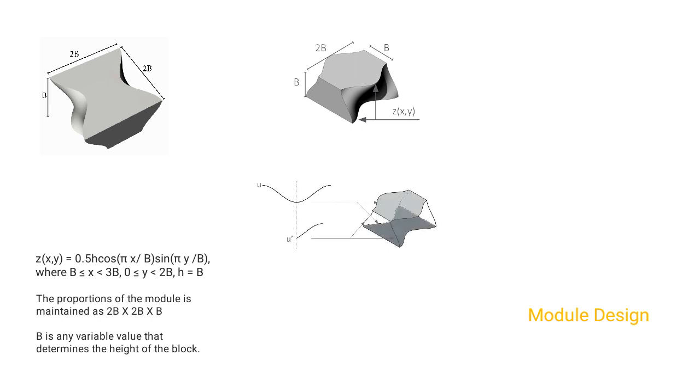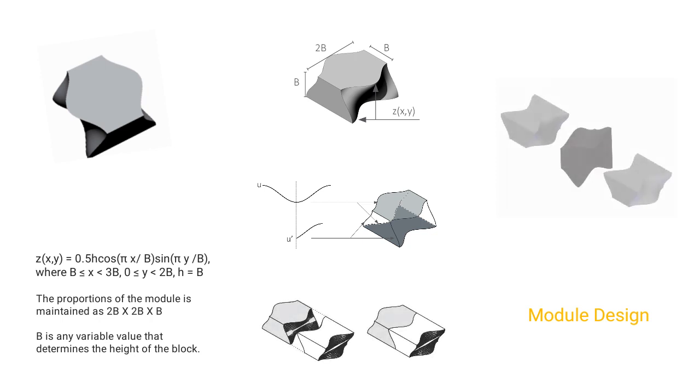Here z(x,y) determines the curve character of sides of the module, and B is a variable value that determines the height of the block. The curves on the top face of the module are the mirror of the curves on the bottom face. This makes the geometry bilaterally symmetrical along the central axis. Thus when rotated as shown, the non-planar surfaces of the rotating module matches with the original module.